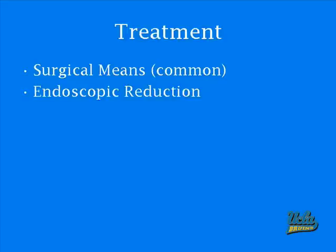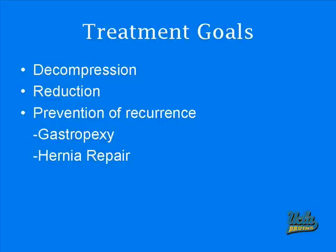As mentioned before, the fatality rate of gastric volvulus after treatment is from 0 to 20%. There are two types of treatment: surgery, which is the most common, and endoscopic reduction, which is still a procedure in its infancy. Both share the same goals: first, decompression of the stomach; second, to reduce the size of the volvulus; and third, prevention of recurrence through the usage of gastropexy or hernia repair.